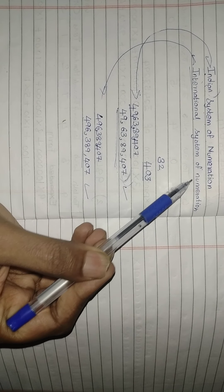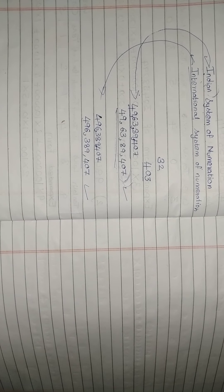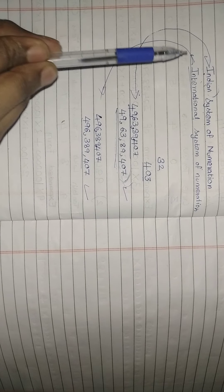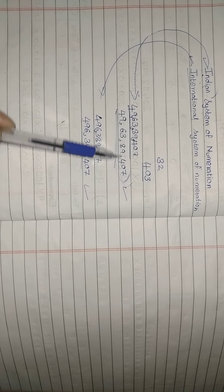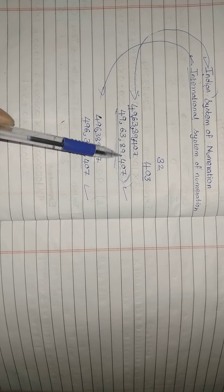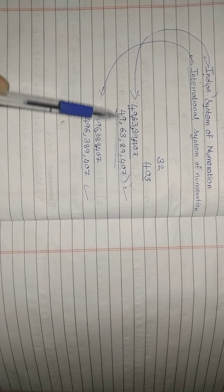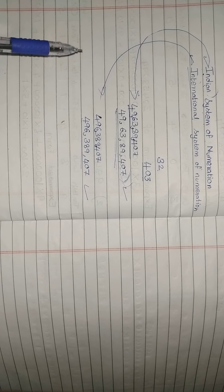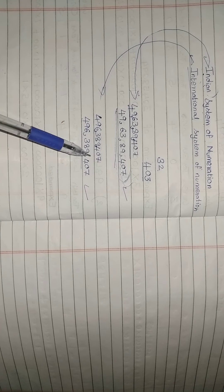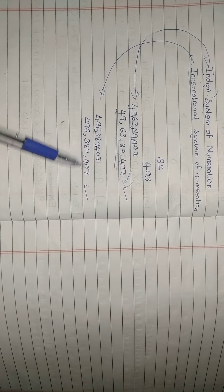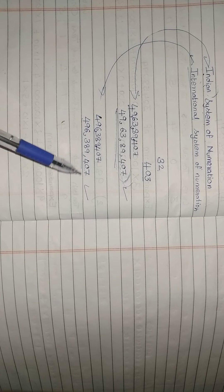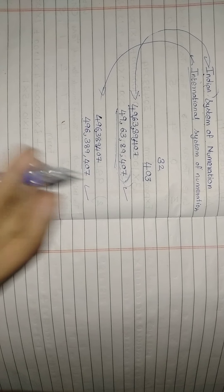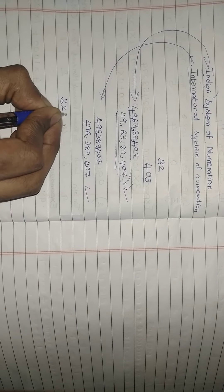For the Indian system of numeration: the last three digits first, then two digits, two digits, placing commas before each group. For the International system of numeration: every three digits from the last, you place a comma.